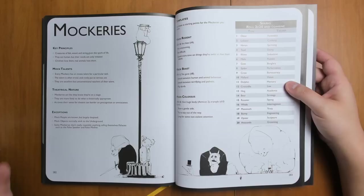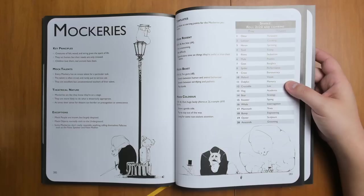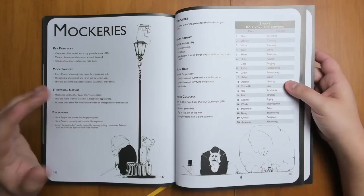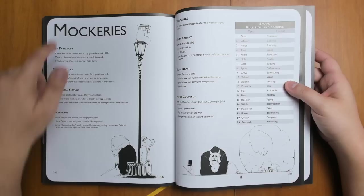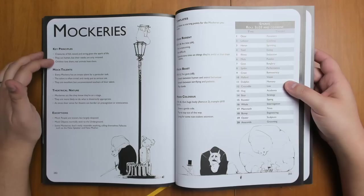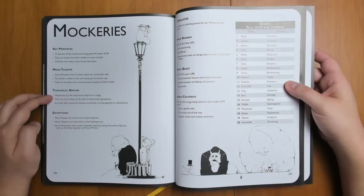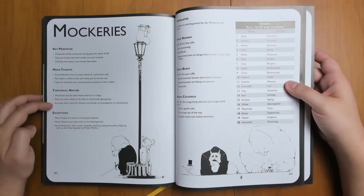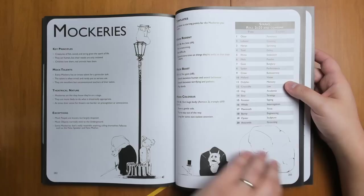You have different types of NPCs. And we start off by the fact that there are a type of NPC called Mockeries. And Mockeries are Muppets. So that's how you know that this is the best game ever made, because there are just Muppets walking around. It doesn't say it explicitly, but if you read it, they are clearly Muppets. So their creatures are felt, wood, and string, given the spark of life. They act human, but their needs are only imitated. Children love them. Real animals hate them. But then you see some more stuff that's much more Muppet-like. Like, Mockeries act like they know they're on a stage. They are more likely to do what is theatrically appropriate. At times, their sense for theatre can border on precognition or omniscience. So there's a lot of fourth wall breaking with them.